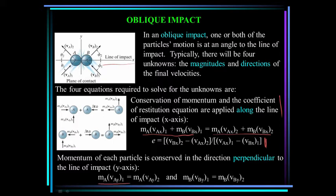And then the last two equations are these two you see here, and that means momentum of each particle is conserved in the direction perpendicular to the line of impact. In that case, that's our y axis. So you have four total equations for oblique impact.